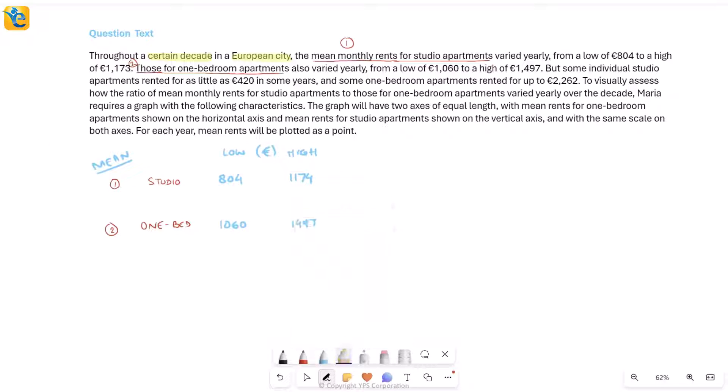Now it says, but some individual studio apartments rented for as little as 420 euros in some years. Is that a problem? It's not really a problem because this is the mean. If my mean is 804, that doesn't mean that all of the individual monthly rents have to be at least 804. If you consider this mean of 804, it could be from a year where some months had very low rents, this 420 talked about, and some months maybe had 1200, 1300, so on. This is just a mean value. Actual monthly rent in that year could be different.